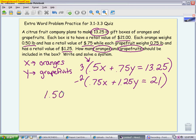So I have 1.5X plus 3 times 0.75 is 2.25Y. I have to take 13.25 and multiply it by 3. And again, definitely reach for a calculator. Make sure you multiply correctly. You get 39.75. And then I'm going to multiply the entire bottom line by negative 2, giving me negative 1.50X, negative 2.50Y, and then take 21 times negative 2, we get negative 42.